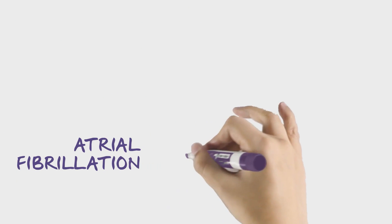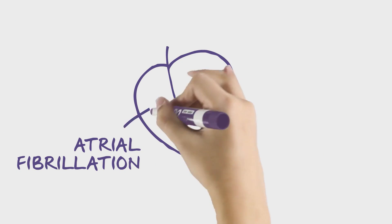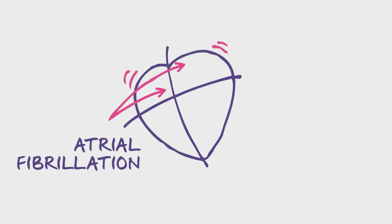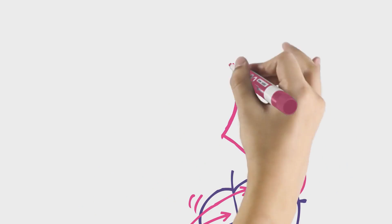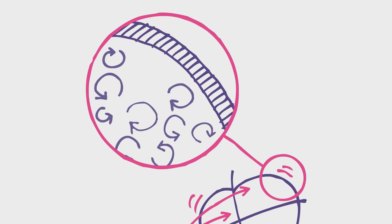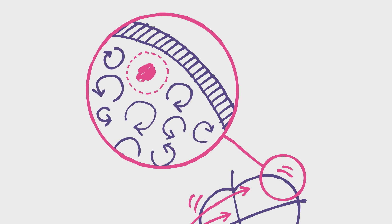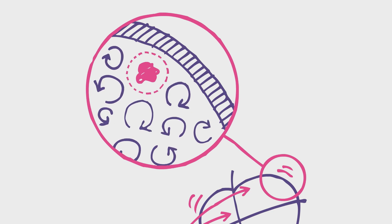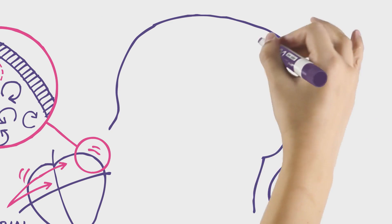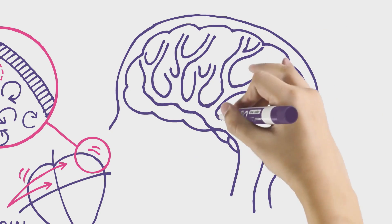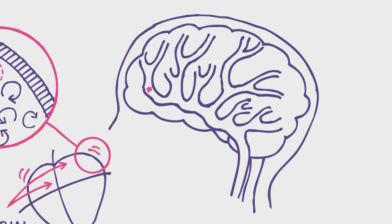Atrial fibrillation is a major risk factor for stroke because it results in the heart beating abnormally. This encourages turbulent blood flow, allowing clots to form where the flow is slow or stagnant. If some or all of a clot then travels from the heart to the brain, it can result in a stroke.